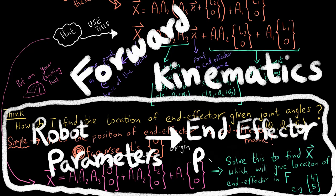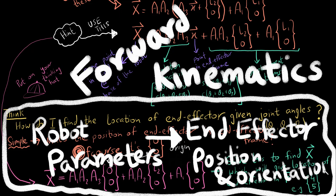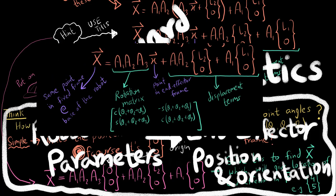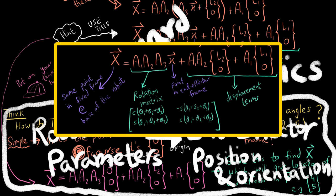The position of the end effector is the big X and the orientation is found by having a look at the rotation matrix. So in this case, the rotation matrix is a1, a2, a3.